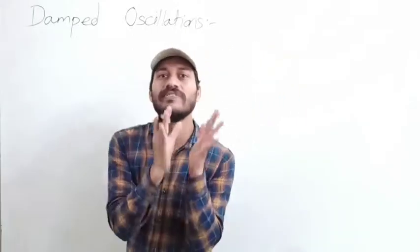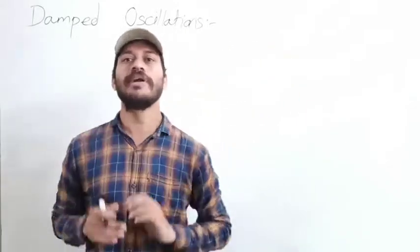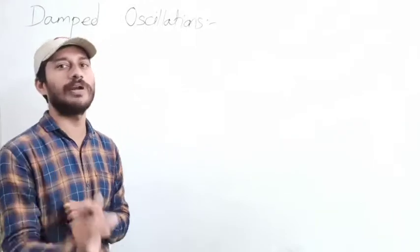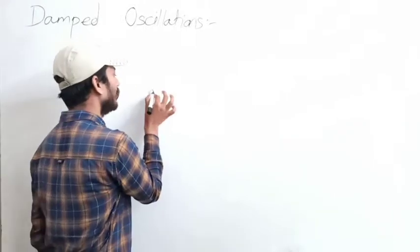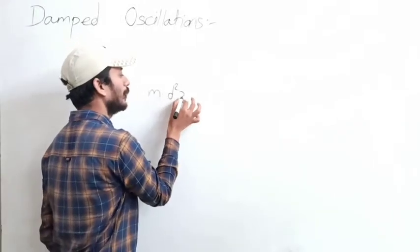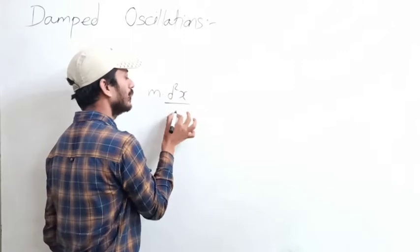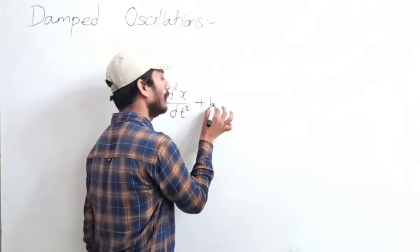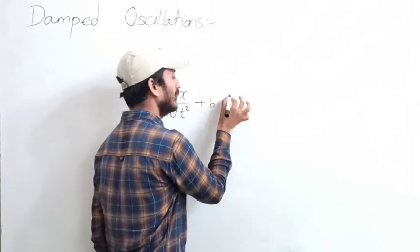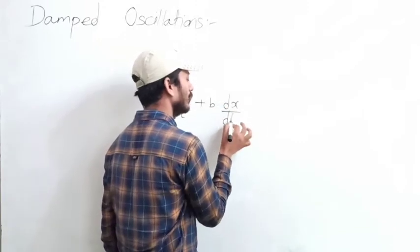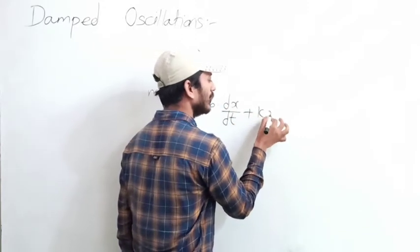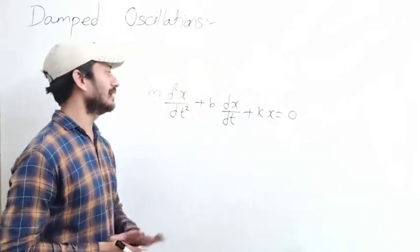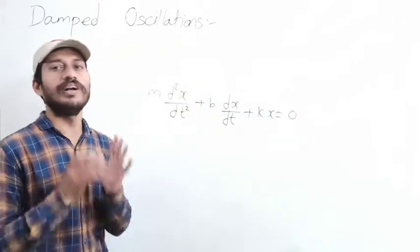The differential equation of damped oscillation is: m into d²x/dt² plus b into dx/dt plus kx equals zero. This is called the differential equation of damped oscillation.